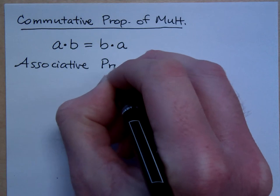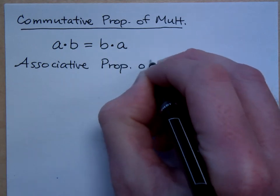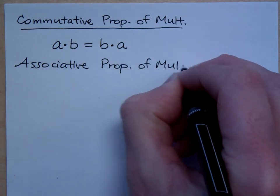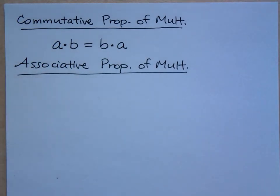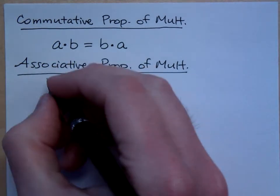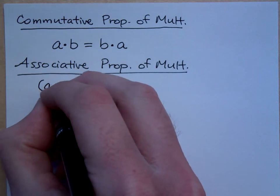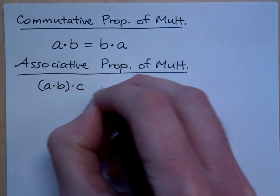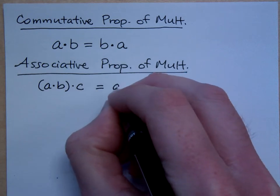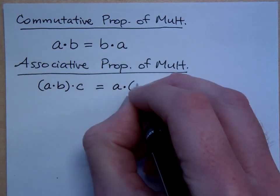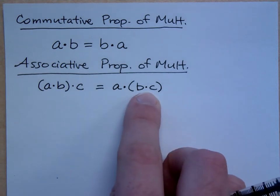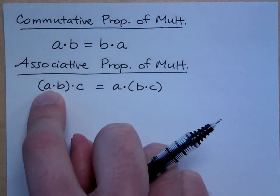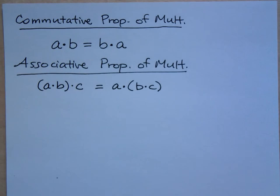And then we also have the associative property of multiplication. And what the associative property does is that it says that regrouping doesn't change your answer. So if I have A times B first and then times C, that's the same thing as having A times B times C. So if you multiply these two factors first, or the first two factors first, it doesn't matter. Your answer is going to be the same.